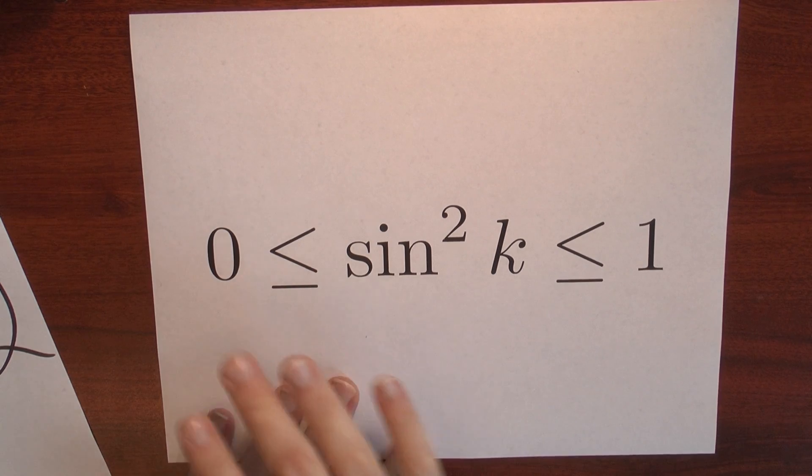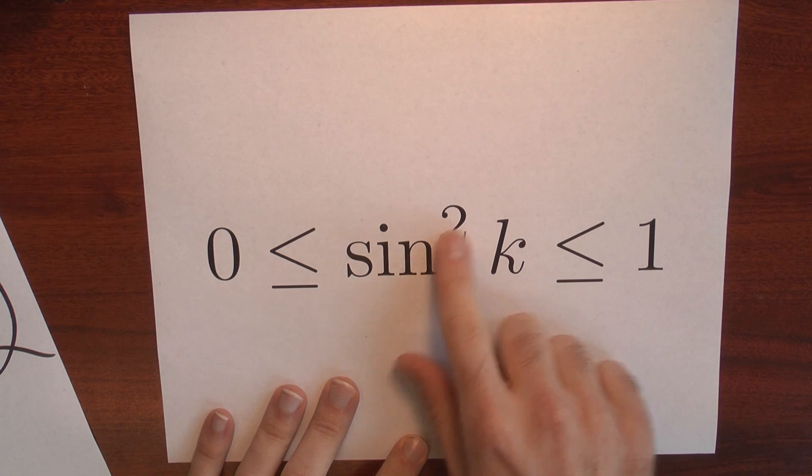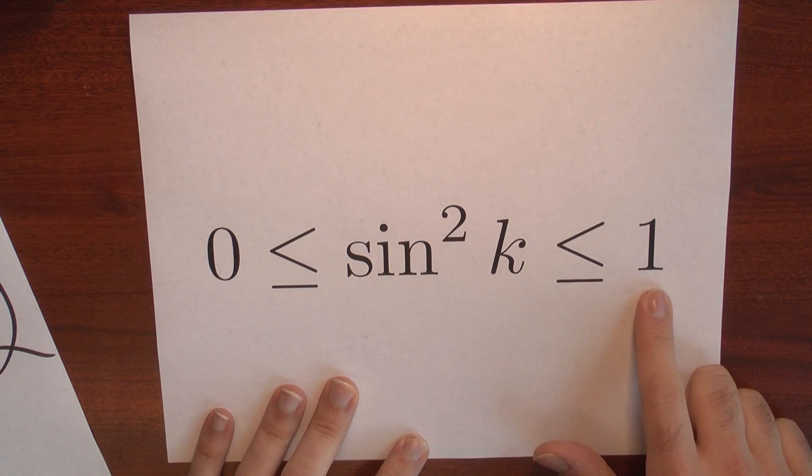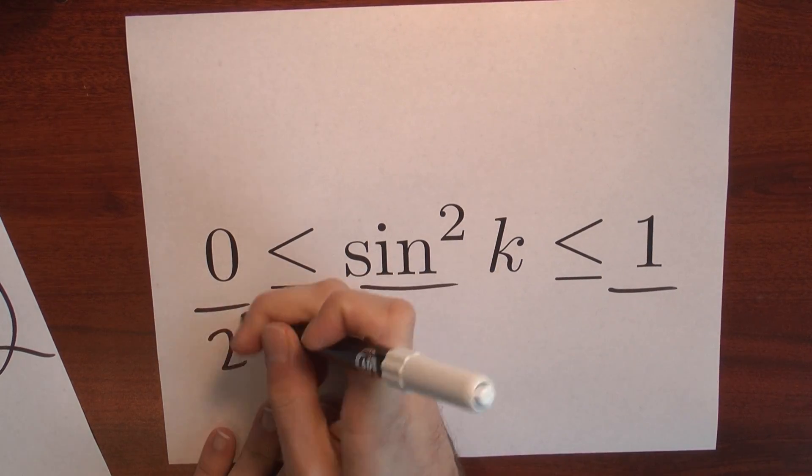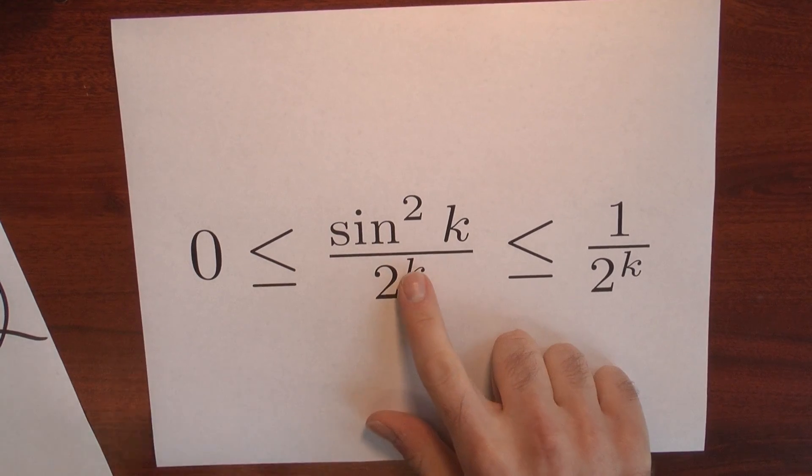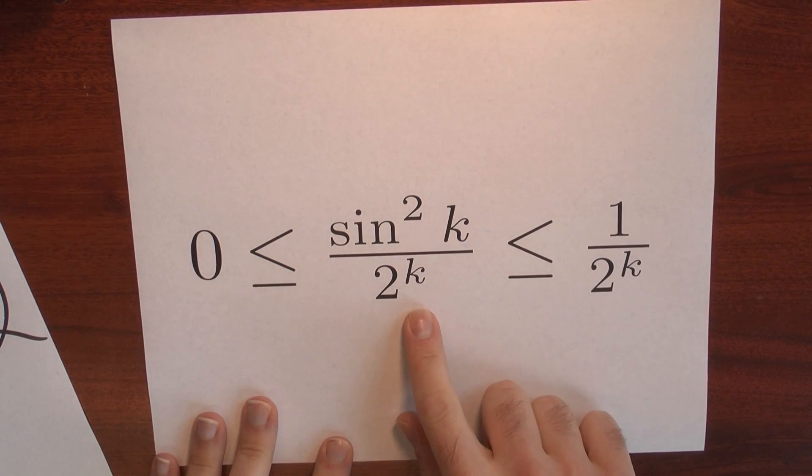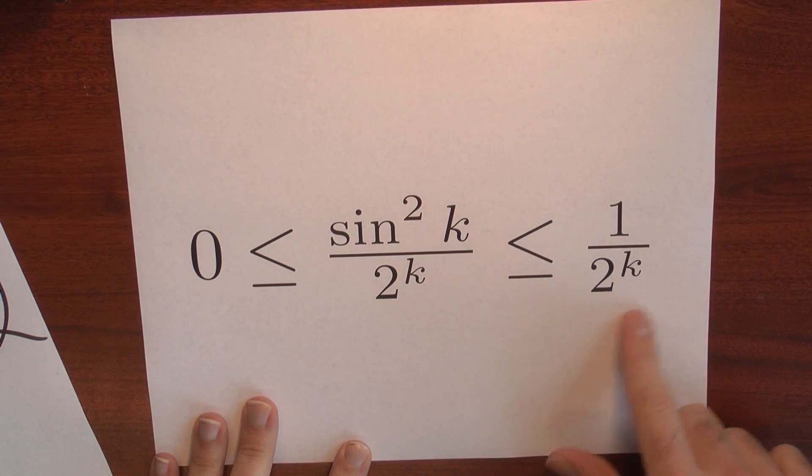Sine of k is between minus 1 and 1. So sine of k squared is between 0 and 1. And if I were to divide all of this by 2 to the k, now I'd have sine of k squared divided by 2 to the k is between 0 and 1 over 2 to the k.